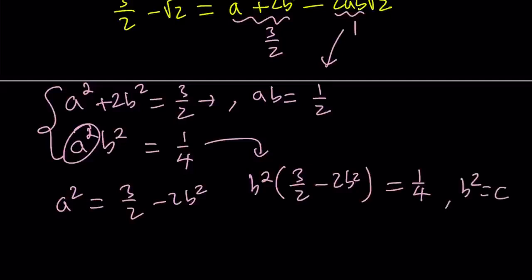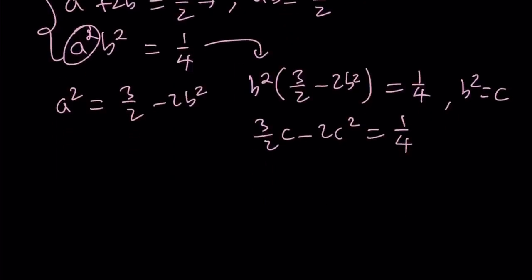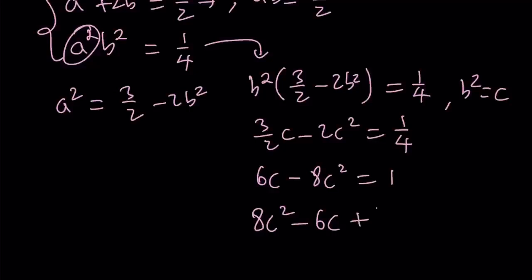Write this as (3/2)c minus 2c² = 1/4. Multiplying both sides by 4 gives 6c minus 8c² = 1, so 8c² minus 6c plus 1 = 0. From here, we can find the c values, set them equal to b², find the b values, and then the a values.